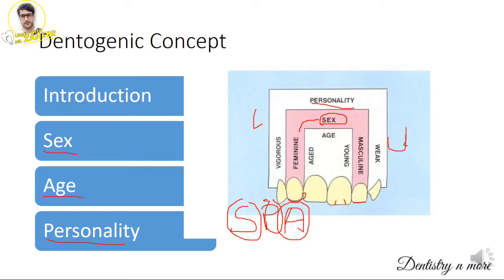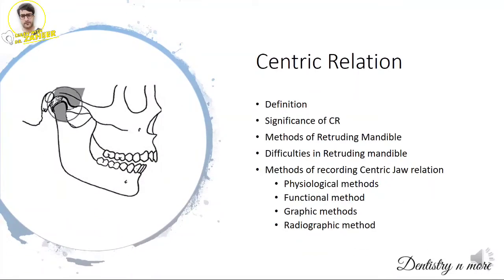Centric relation is a very common and easy topic. Frame your answer under these headings: definition, why we need centric relation, methods of recording the mandible, difficulties faced while recording, and descriptions of each method. Physical/physiological methods include asking the patient to tap continuously. Functional methods include Needlehouse, Paterson, and Mayerson's techniques. Graphic methods include intraoral and extraoral techniques, and radiographic methods.